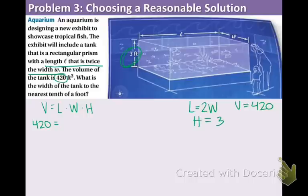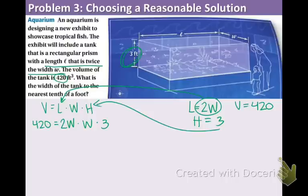So now, let's plug all that in. The 2W is going to go where the L is. The W is going to come down, and the H is going to be replaced by 3. Take a moment to let that sink in. The good news is, with all this substituting, we only have one variable now. That was the whole point. Before, we had three variables, and it was getting overwhelming.